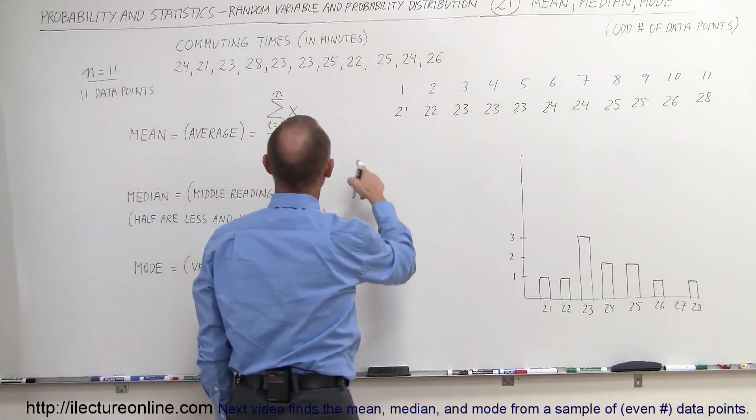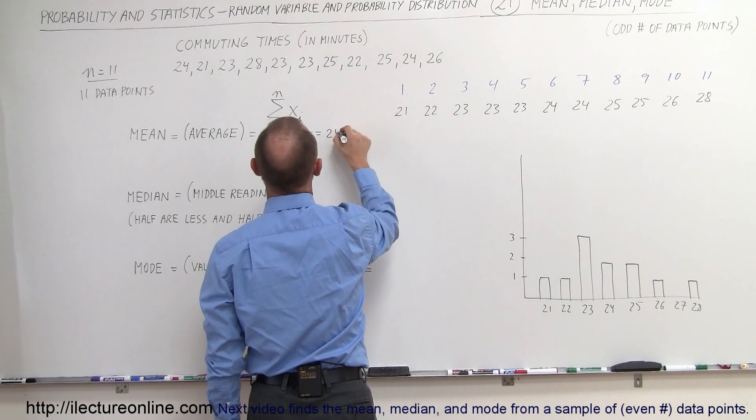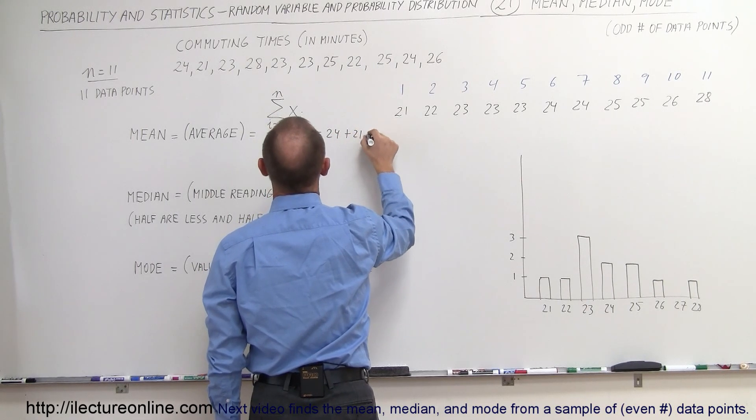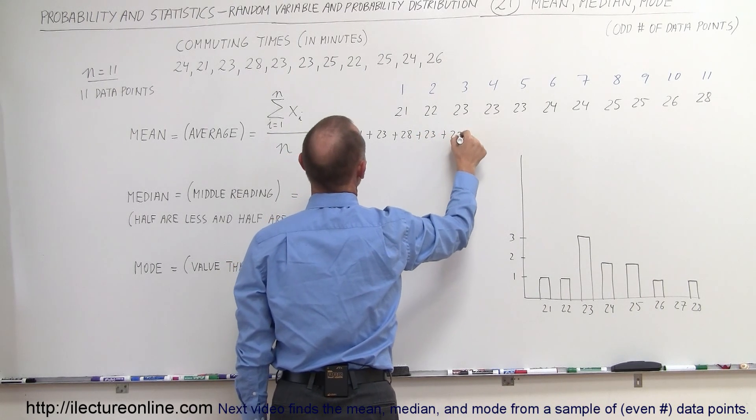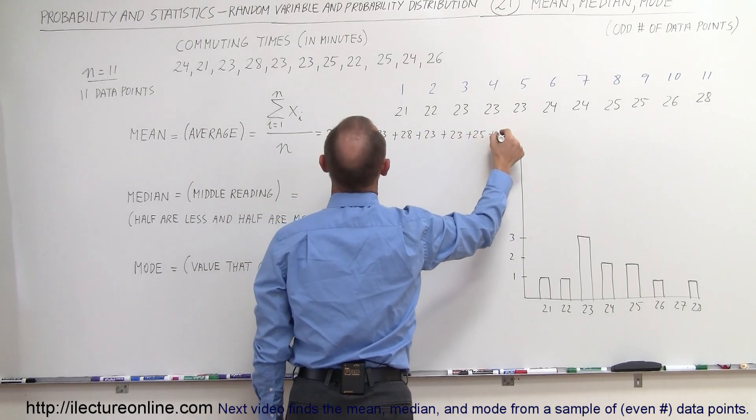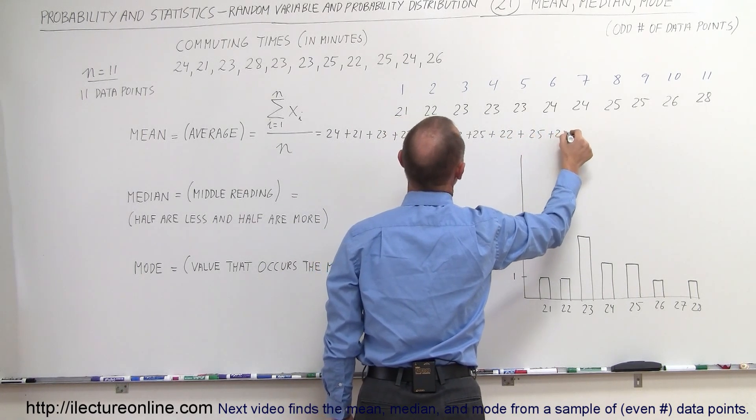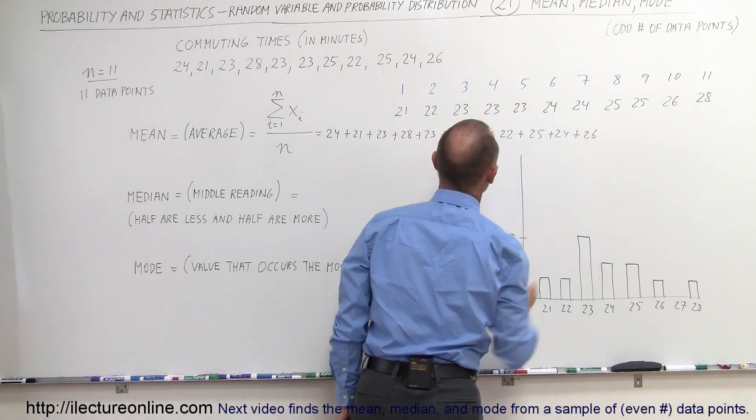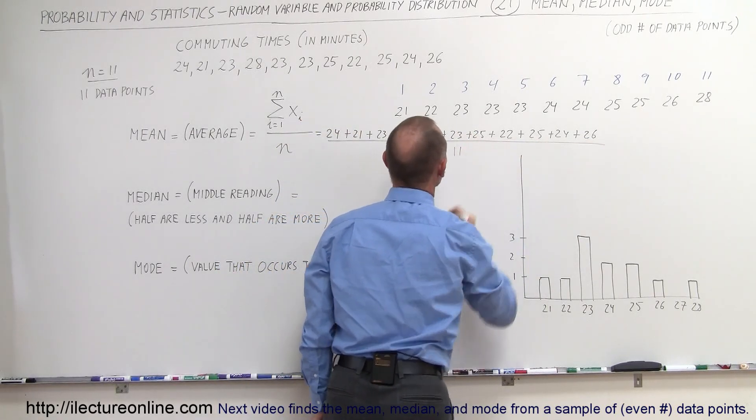So when we add them all up, so that's the same. So what this means is that this is equal to 24 plus 21 plus 23 plus 28 plus 23 plus 23 plus 25 plus 22 plus 25 plus 24 plus 26. And then you take the whole thing and you divide it by 11.